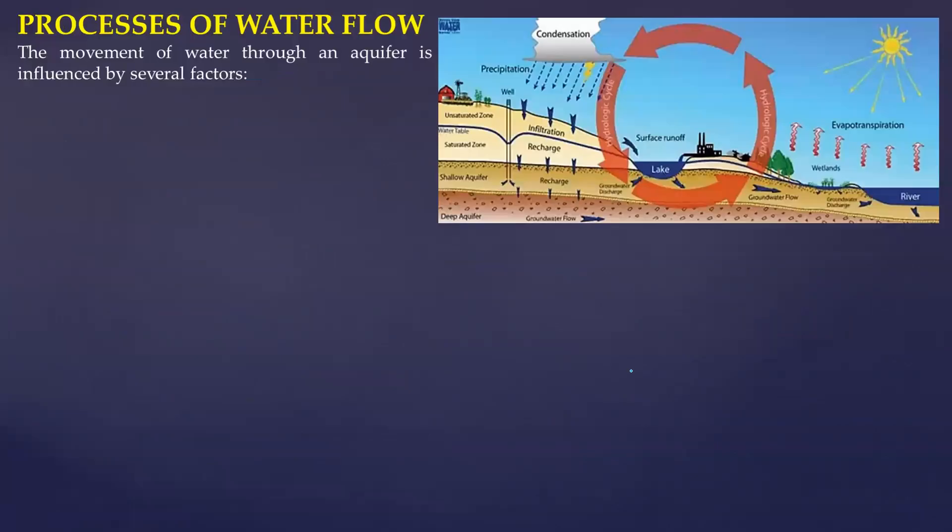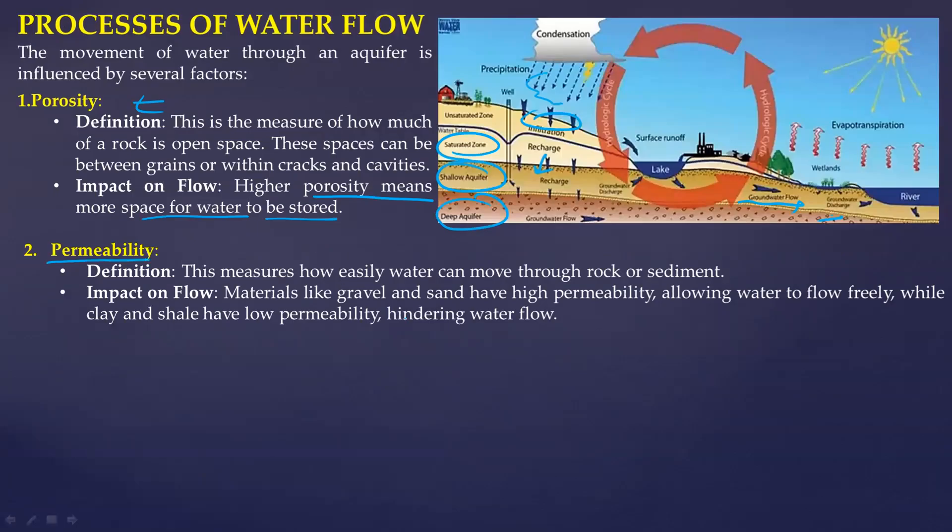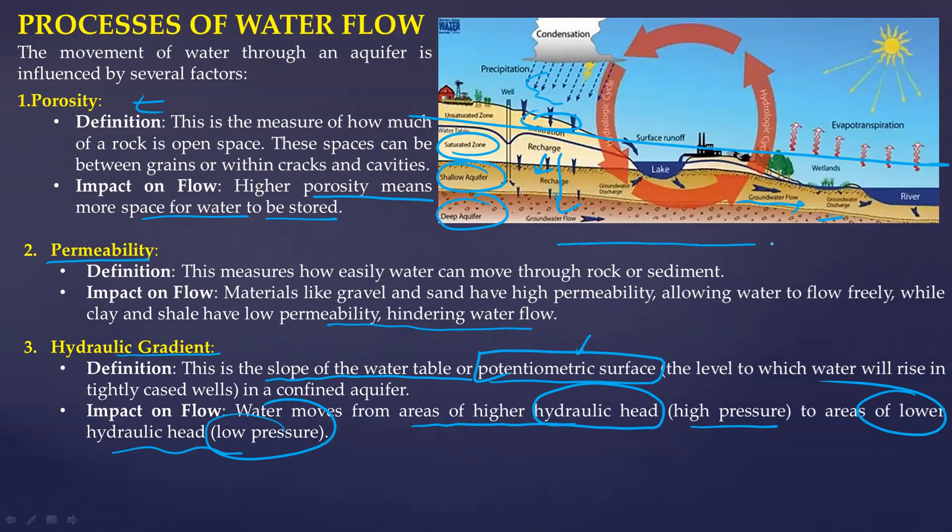Now let's look into the processes of water flow. As we know that rain falls here, infiltration happens, and then there is a recharge. You have saturated zone, shallow aquifer, you have deep aquifer, and this is where groundwater flow and discharge also happens. The three processes will be porosity, higher porosity means more space for water to be stored. Then higher permeability means more moving of water without hindering, ease of movement. And the third is hydraulic gradient. Hydraulic gradient is based on the slope of water table, or which we say is potentiometric surface. Water moves from areas of higher hydraulic head, higher pressure to areas of lower hydraulic head, lower pressure. This triggers the entire process of subsurface water flow.